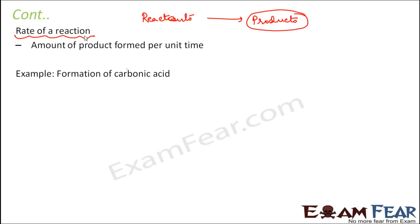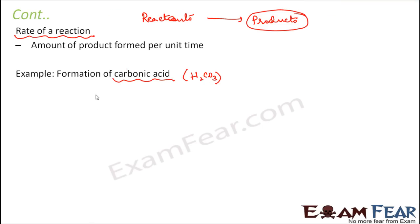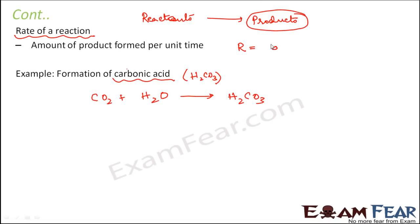Let us take the example of carbonic acid, which is formed from water and carbon dioxide — H2CO3. The chemical reaction is: CO2 + H2O → H2CO3. The rate of reaction is the amount of product produced per unit time. There are many factors that can impact the rate of reaction, such as temperature, pH, and the presence of enzymes.